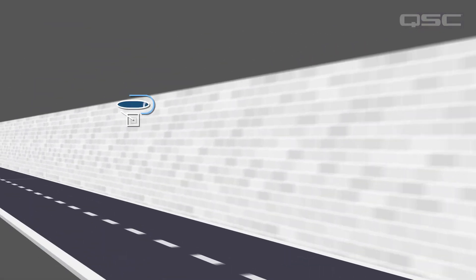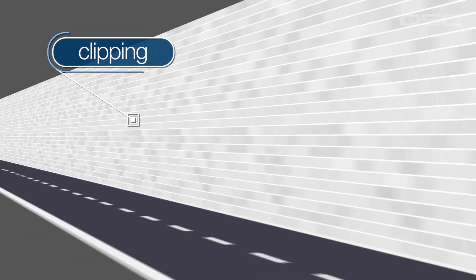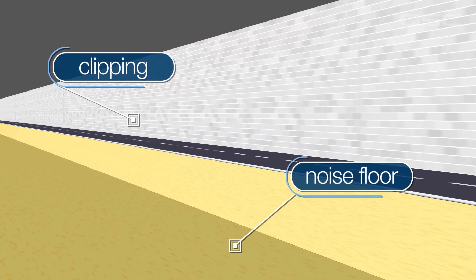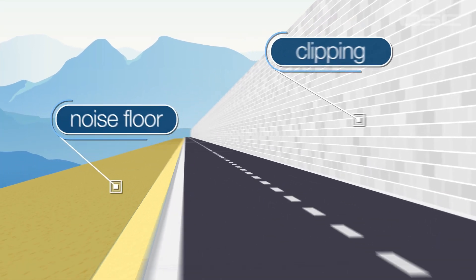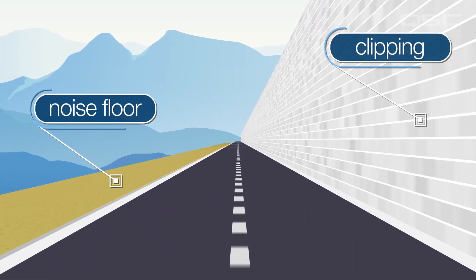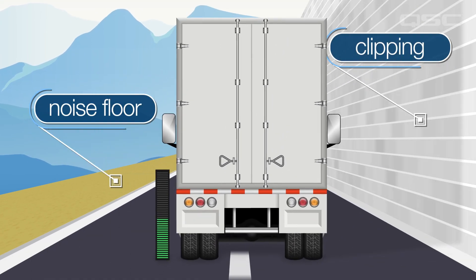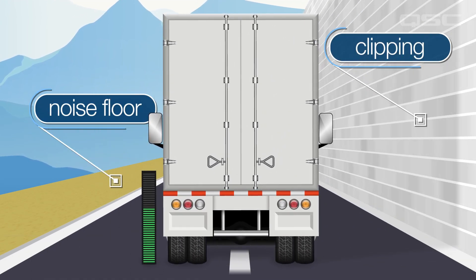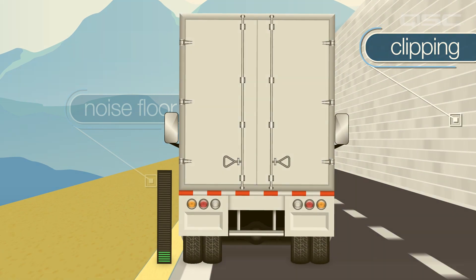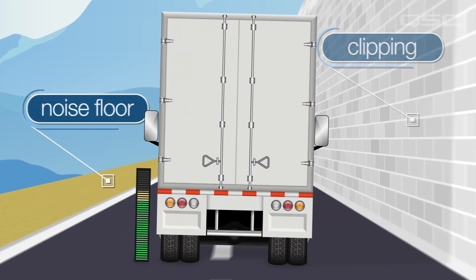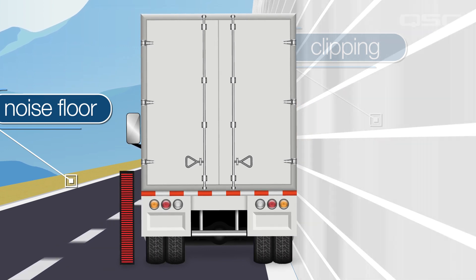Think of dynamic range like a highway. On one side of the highway we have a wall — that represents clipping. On the other side we have a steep slope into a ditch — this will be the noise floor. Now imagine a big truck on the highway; this represents the signal. We want to keep the truck steady on the highway in between the wall and the ditch. If we get too close to the ditch we're going to get stuck in the weeds. If we get too close to the wall we might break a mirror — or worse.